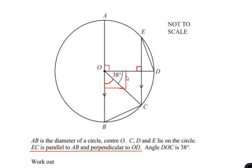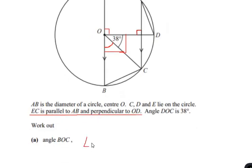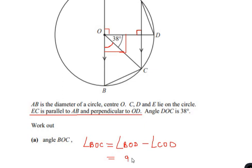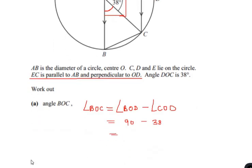We have the total angle BOD also given as 90 degrees. To find the angle BOC we just subtract the 38 degrees from the total 90 degrees. So we can write angle BOC as angle BOD minus angle COD: 90 degrees minus 38 degrees, which gives us angle BOC as 52 degrees.